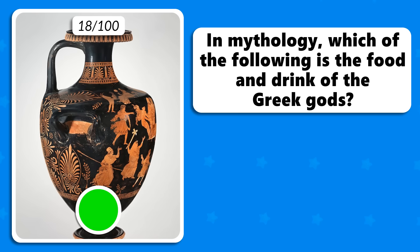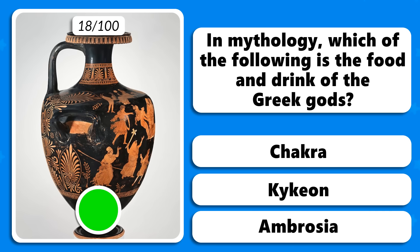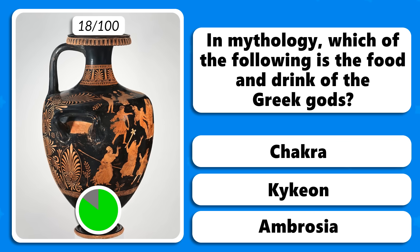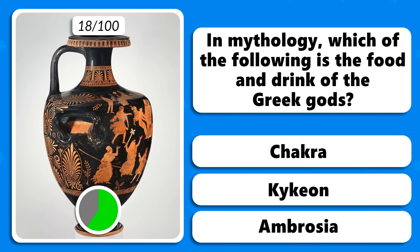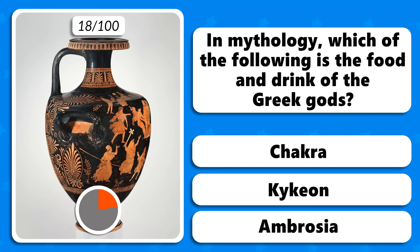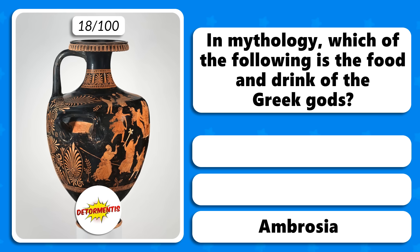In mythology, which of the following is the food and drink of the Greek gods — Chakra, Kikion or Ambrosia? Ambrosia.